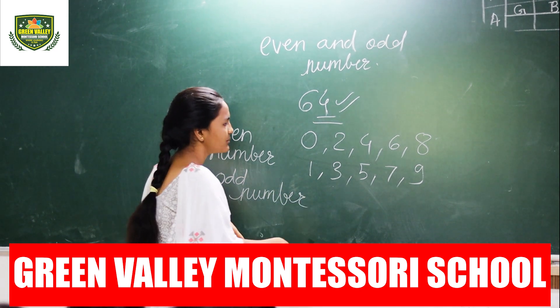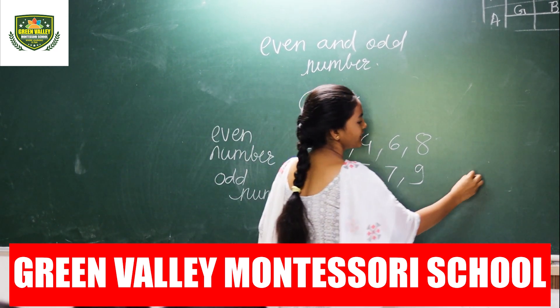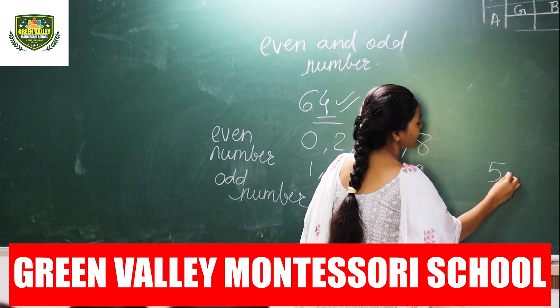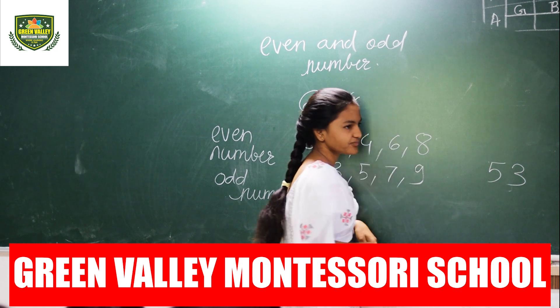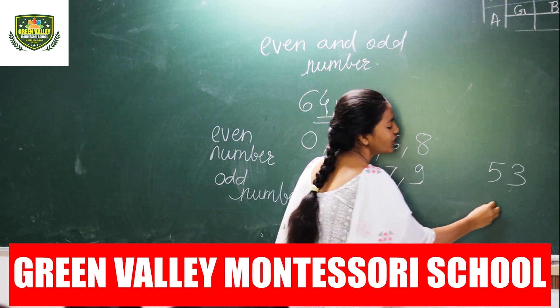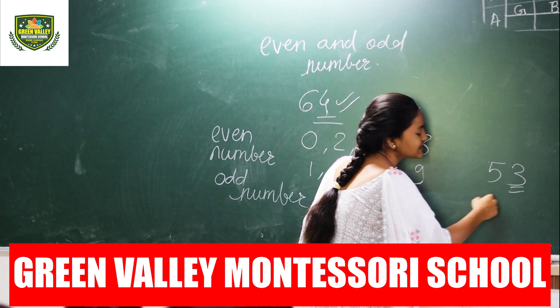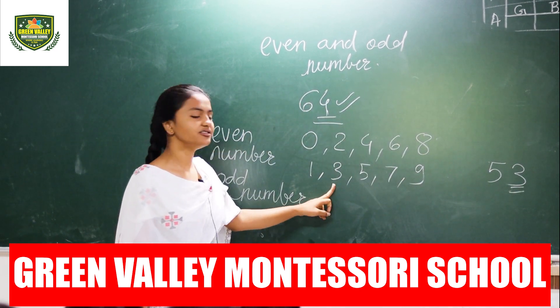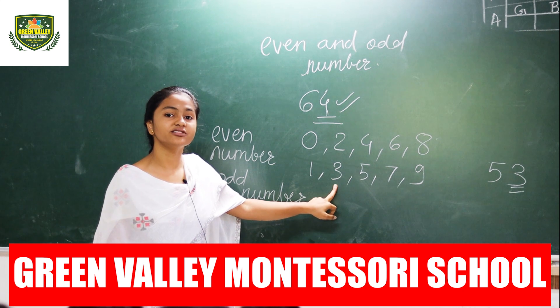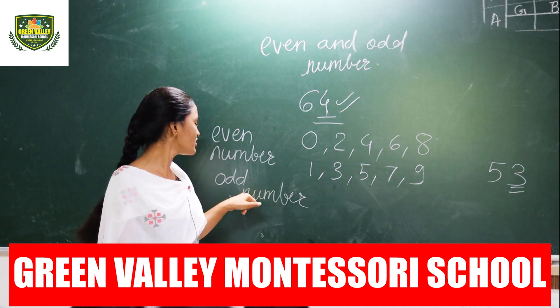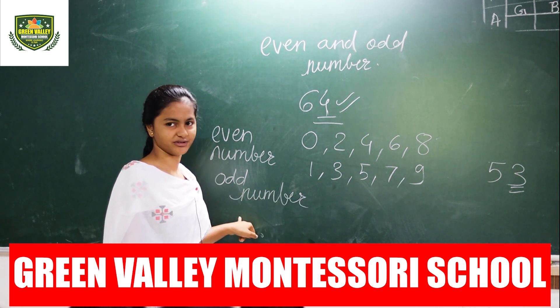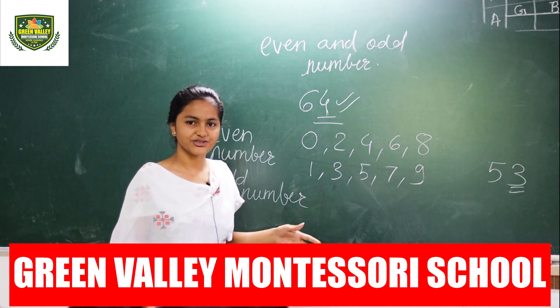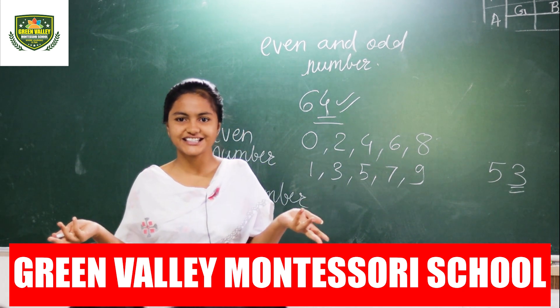For example, 53. Here on the one's place there is 3, so it is an odd number. It is easy to identify even and odd numbers by looking at the one's place digit.